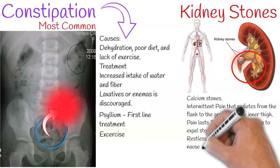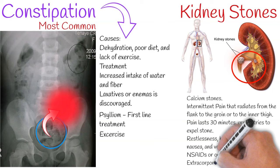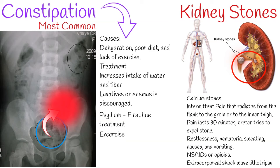Renal colic can be accompanied by urinary urgency, restlessness, hematuria, sweating, nausea, and vomiting. Management of pain often requires intravenous administration of NSAIDs or opioids. Extracorporeal shock wave lithotripsy is a non-invasive technique for the removal of kidney stones.